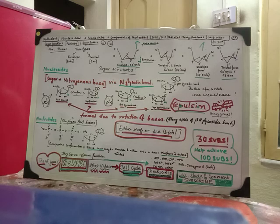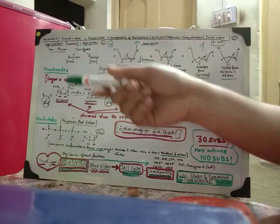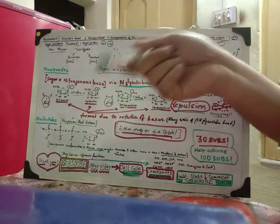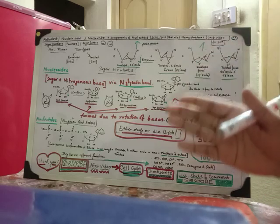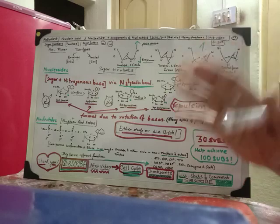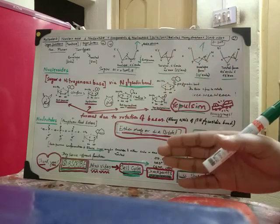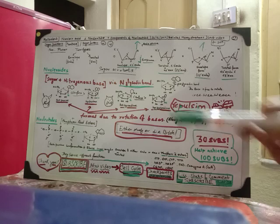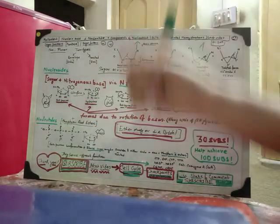There are two phases of puckering — envelope and twisted. The envelope form being the endo form and the twisted being the exo form. In the envelope form, four carbons are nearly co-planar while the fifth is away from the plane. So carbons 1', 2', 3', and 4' are quite in the plane, while the fifth carbon is away — it's on the endo side.